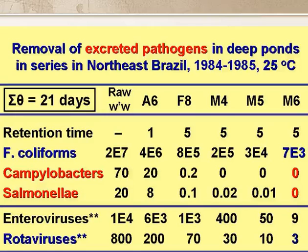The slide shows the results of some work we did quite a few years ago on a series of ponds in northeast Brazil. The pond system comprised a one-day anaerobic pond, followed by a facultative and three maturation ponds, each with a retention time of five days. We monitored faecal coliforms, two bacterial pathogens — Salmonella and Campylobacter — and two lots of excreted viruses: enteroviruses and rotavirus.